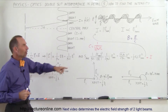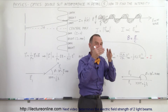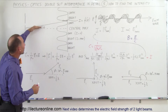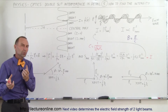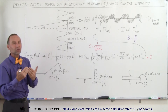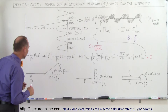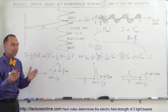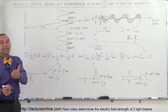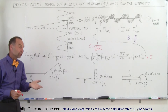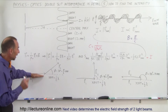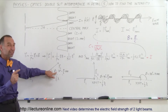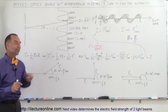When two waves come together, what determines the intensity is the phase difference between their electric field oscillations. This phase difference is a function of the path length, which depends on the angle, and how large a fraction of the wavelength the extra distance traveled represents. For example, if one wave travels an extra distance of one-twelfth of a wavelength, that equals a phase difference of 30 degrees, or π/6 radians.